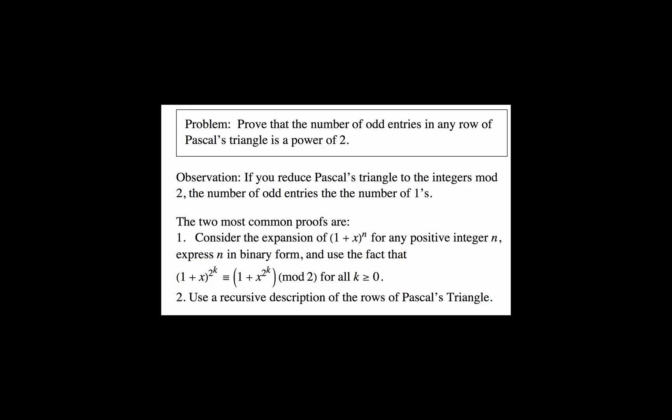So there are two common proofs. The first is to take the expansion of (1 + x)^n and look at the coefficients of that expansion. You can show that by decomposing n into its binary form, every factor (1 + x)^(2^k) that appears can be reduced to (1 + x^(2^k)).